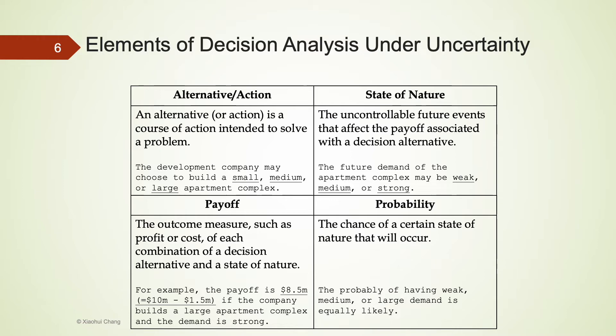In decision analysis under uncertainty, there are four elements: alternatives, also known as actions, state of nature, payoff, and probability.